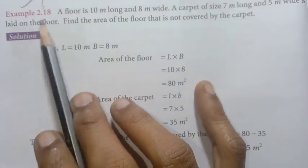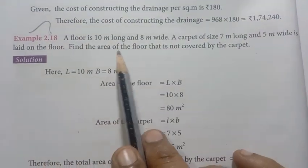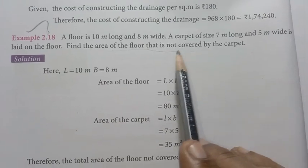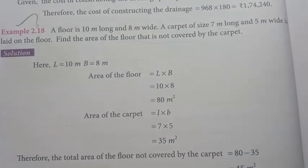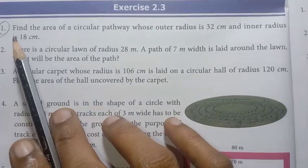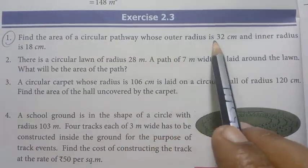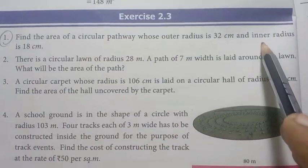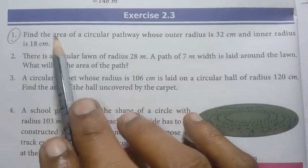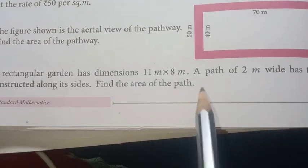Page number 36, Example 2.18 is an important question — find the area of the floor that is not covered by the carpet. Page number 38, Exercise 2.3, first one: find the area of the circular pathway whose outer radius is 32 centimetres and inner radius is 18 centimetres — important.